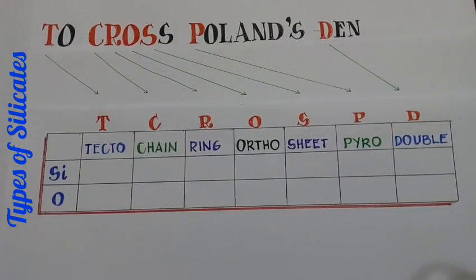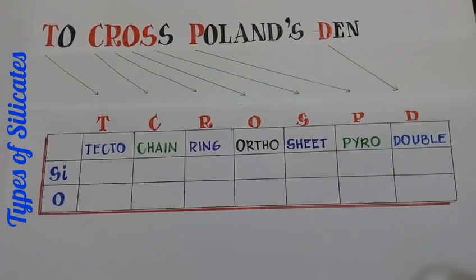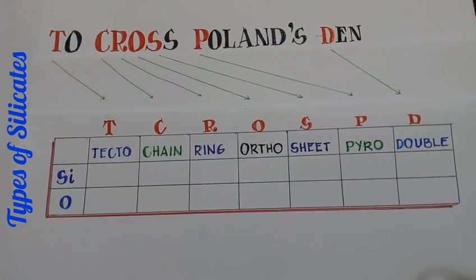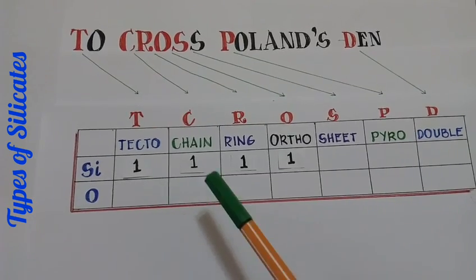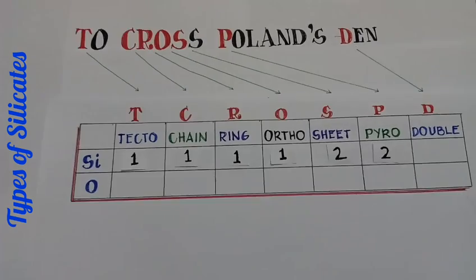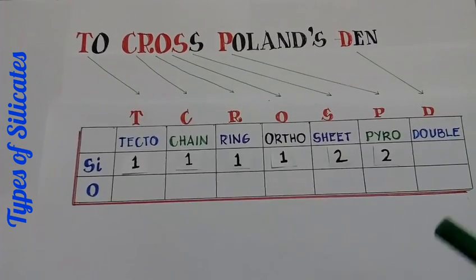Now we will check the number of silicon and oxygen atoms. First, place one in the first four columns.